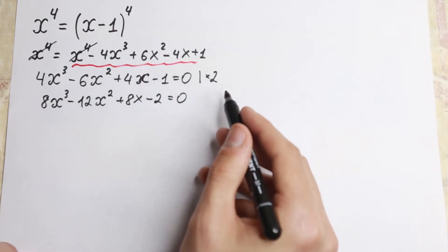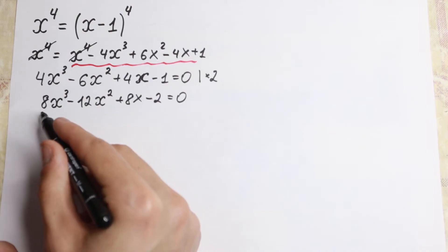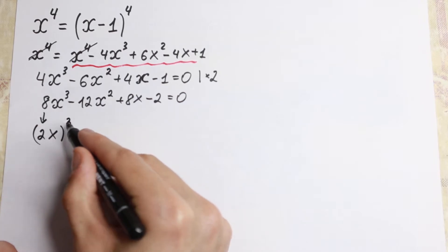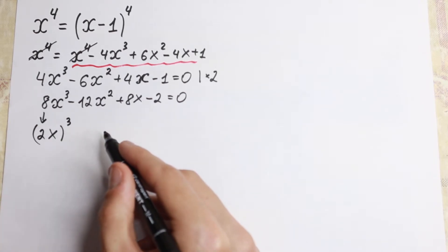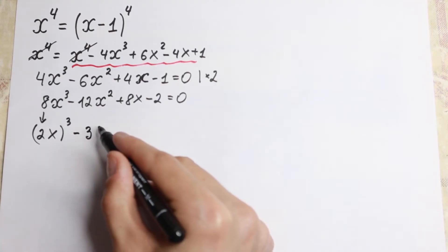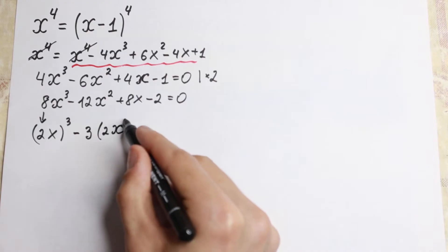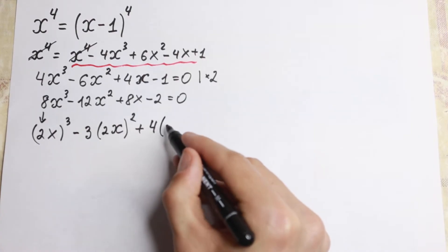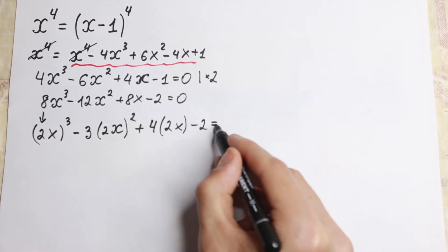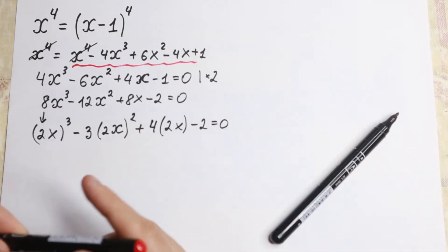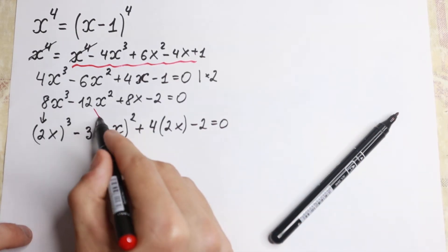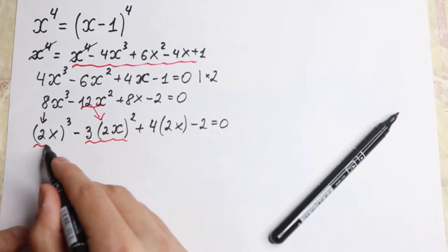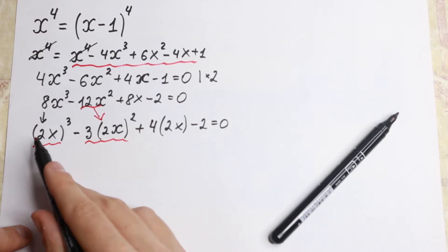Why multiply by 2? Because now we have 8x cubed, and 8 equals 2 cubed, so we can write it as (2x) to the third power. And 12x squared can be written as 3 times (2x) squared. And 8x can be written as 4 times 2x. So all terms share the same element 2x.